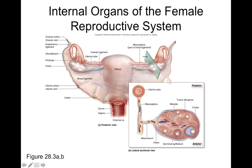Looking deeper in the pelvic cavity, here is an anterior view of the uterus held in position by many suspensory ligaments. The large one is called the broad ligament. The wider structures on the sides are the ovaries. What holds the ovaries in position is the ovarian ligament, which connects the ovary to the uterus on the medial part of the ovary. The ovaries are suspended within the suspensory ligaments in the pelvic cavity.